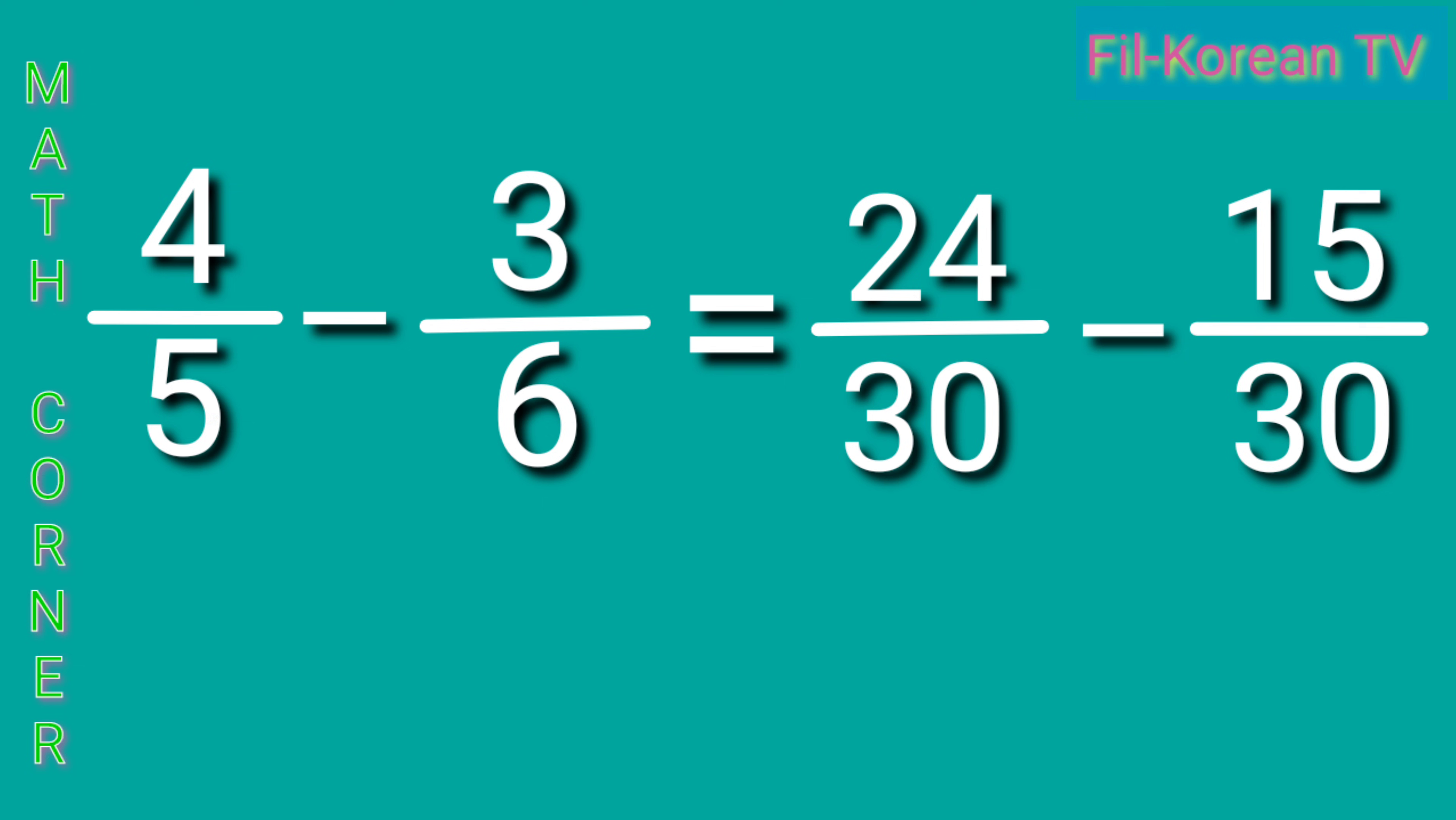The fractions now are already similar fractions. So we can subtract now. Let us subtract the numerators and then copy the LCD. 24 minus 15 equals 9. And then, copy the LCD.